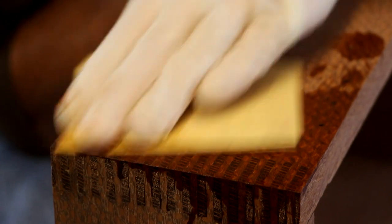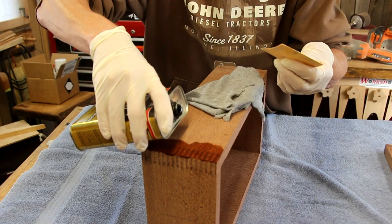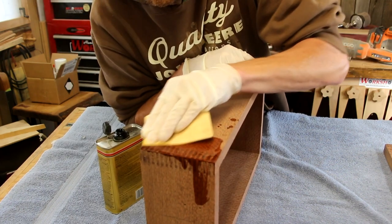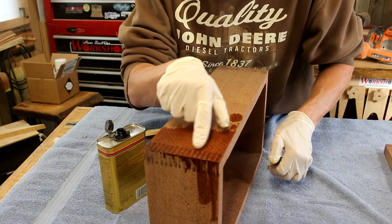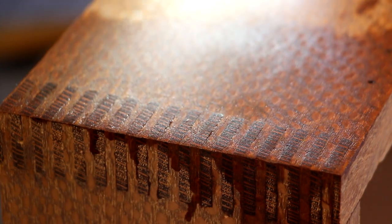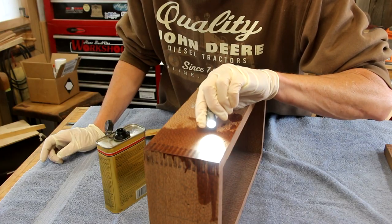We're basically wet sanding with the polyurethane to create a wood and polyurethane mixture that fills the pores. After a little while, you'll start to see those little cracks getting filled in. If I shine that same light across there, you don't see quite the same gap.